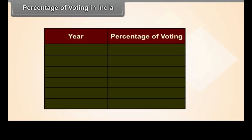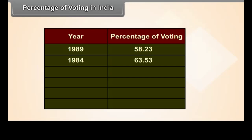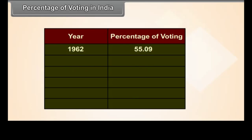Percentage of voting in India across general elections: 2009 — 58.99%, 2004 — 57.75%, 1999 — 59.73%, 1998 — 62.04%, 1996 — 57.94%, 1991 — 56.73%, 1989 — 58.23%, 1984 — 63.53%, 1980 — 56.85%, 1977 — 60.48%, 1971 — 55.25%, 1967 — 60.95%, 1962 — 55.09%, 1957 — 63.75%, 1952 — 61.16%.